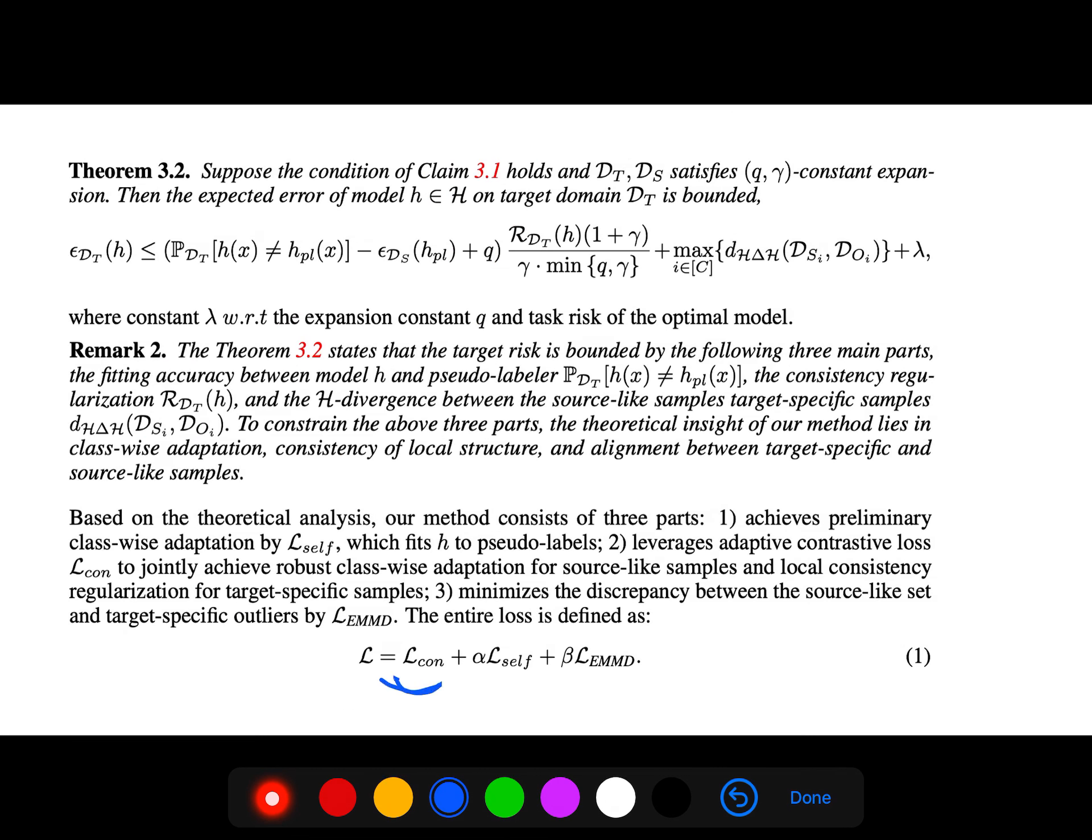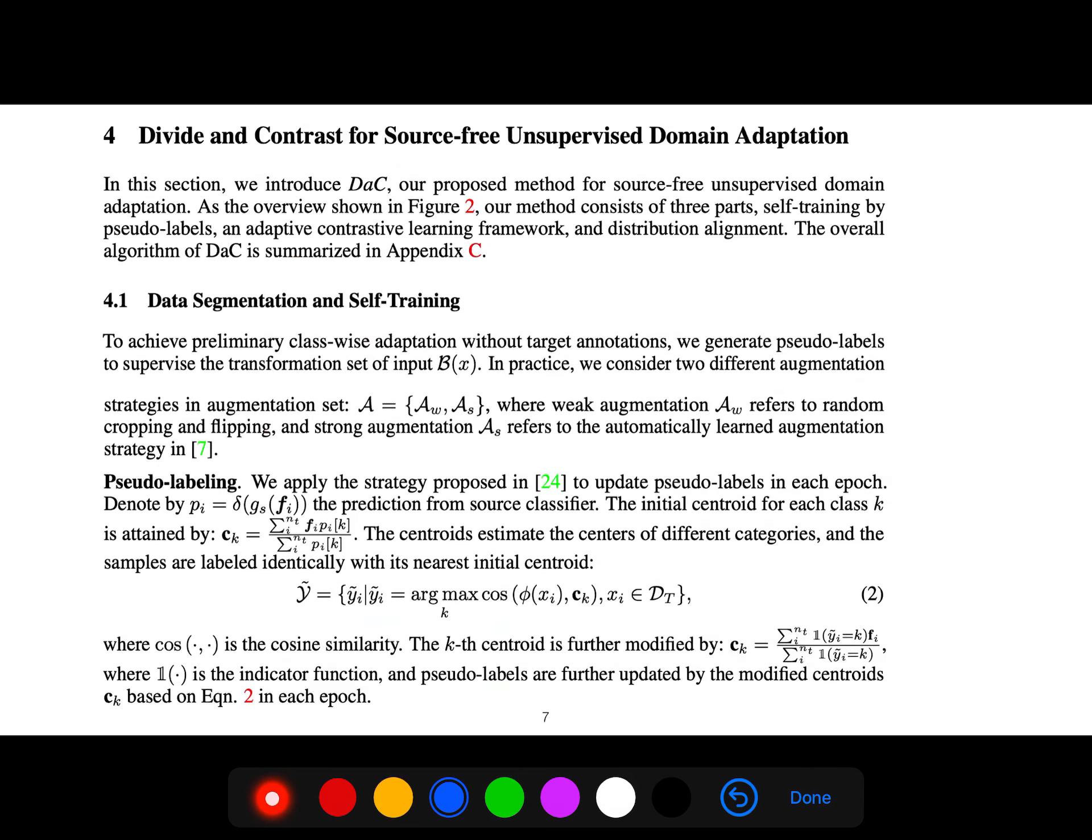The entire loss consists of the contrastive loss, the self-training loss, and the maximum mean discrepancy. We first introduce DaC, our proposed method for source-free unsupervised domain adaptation with data segmentation and self-training.